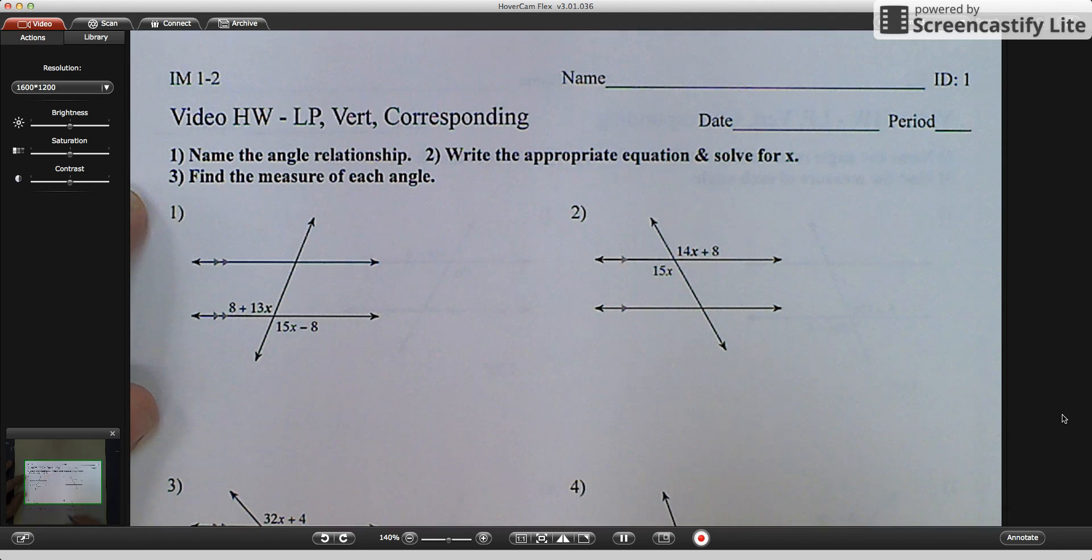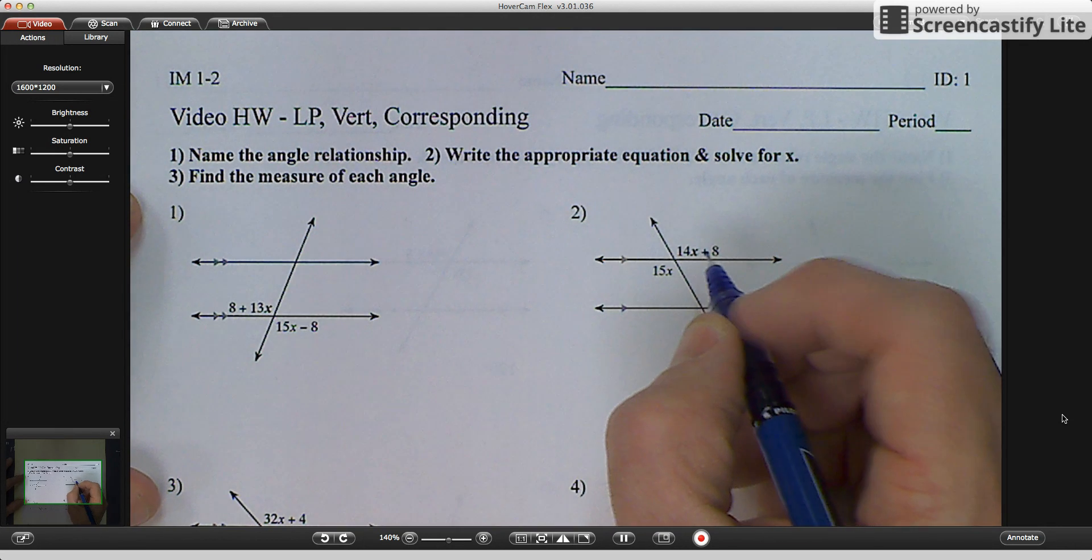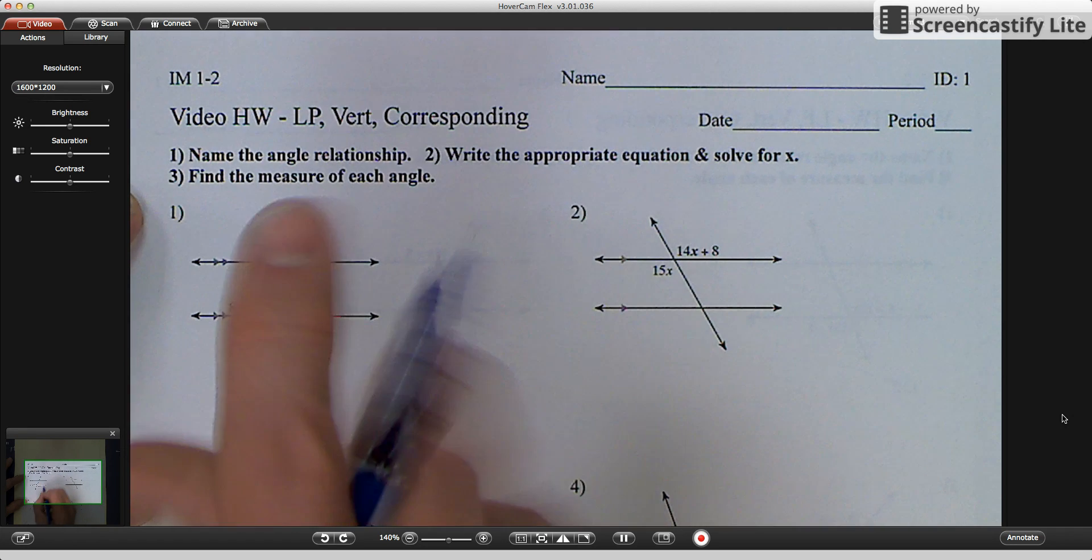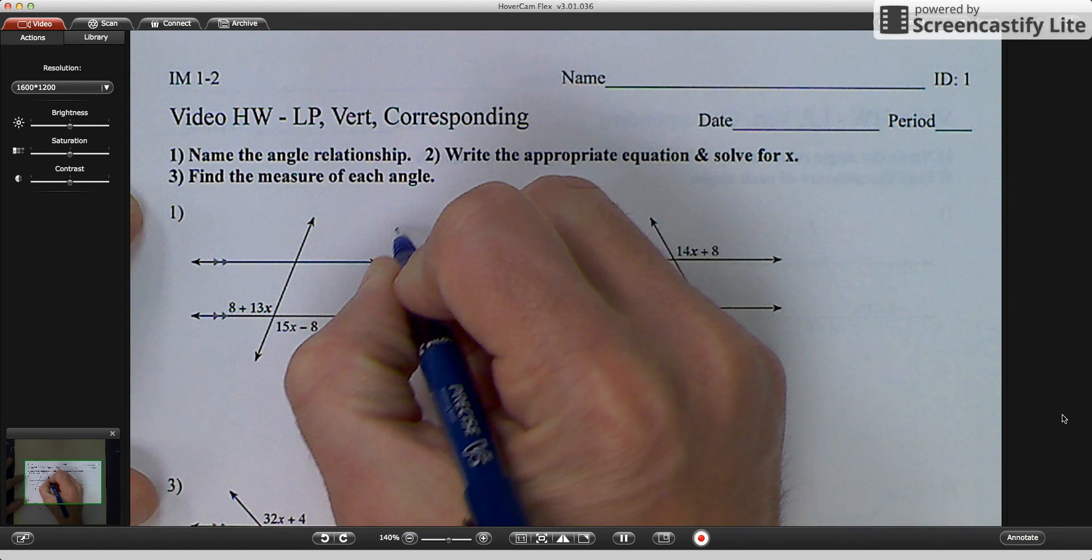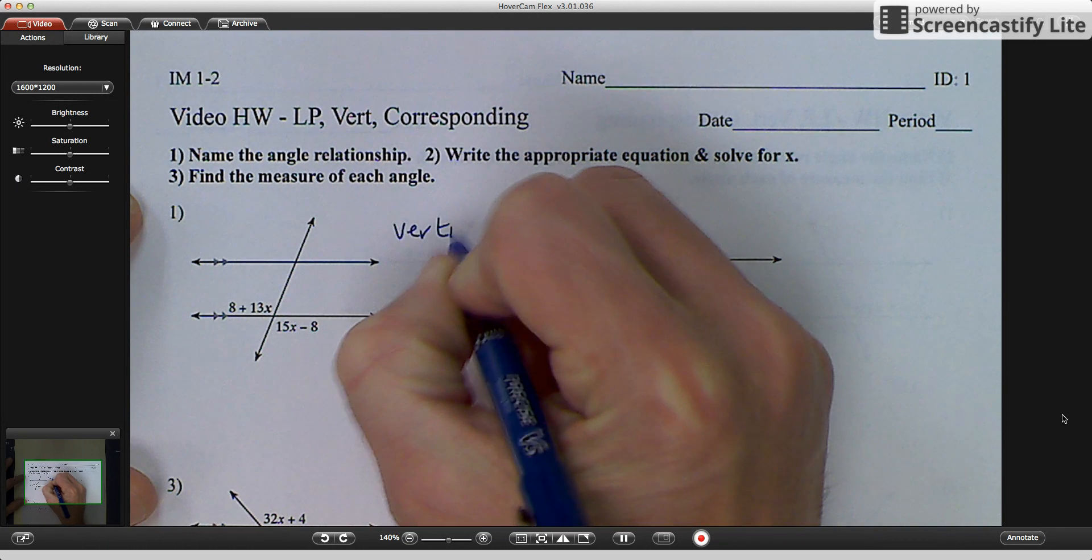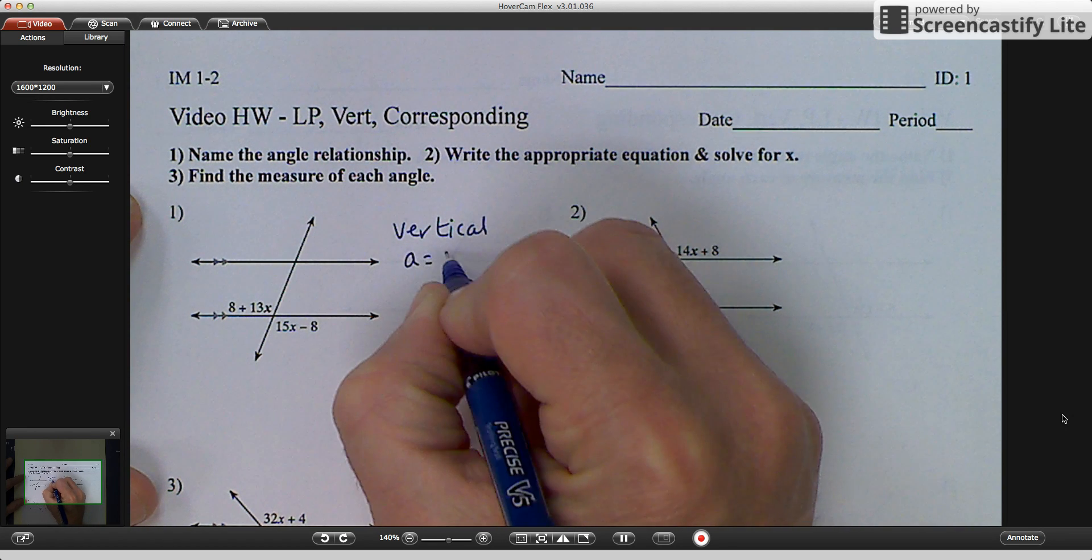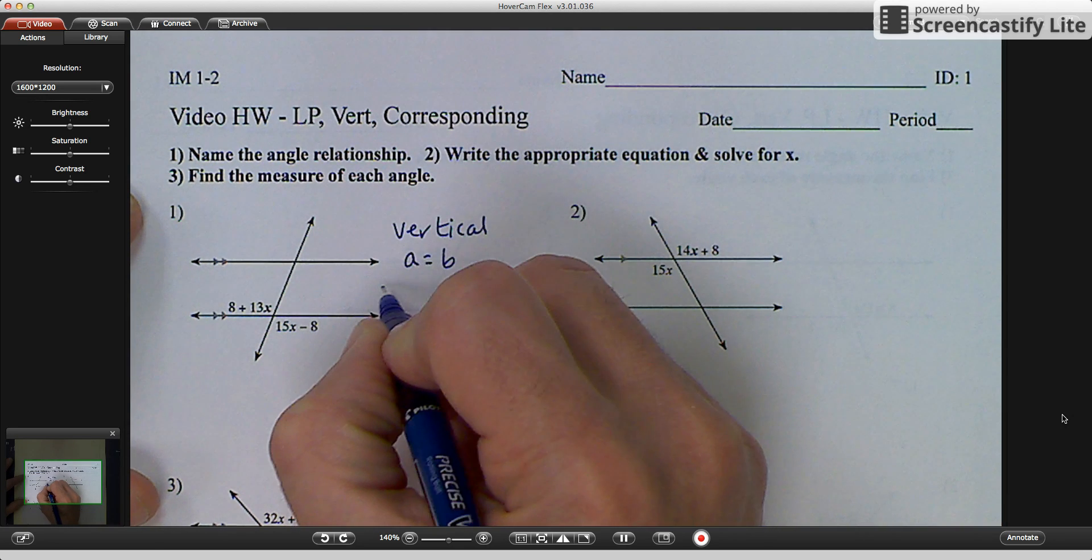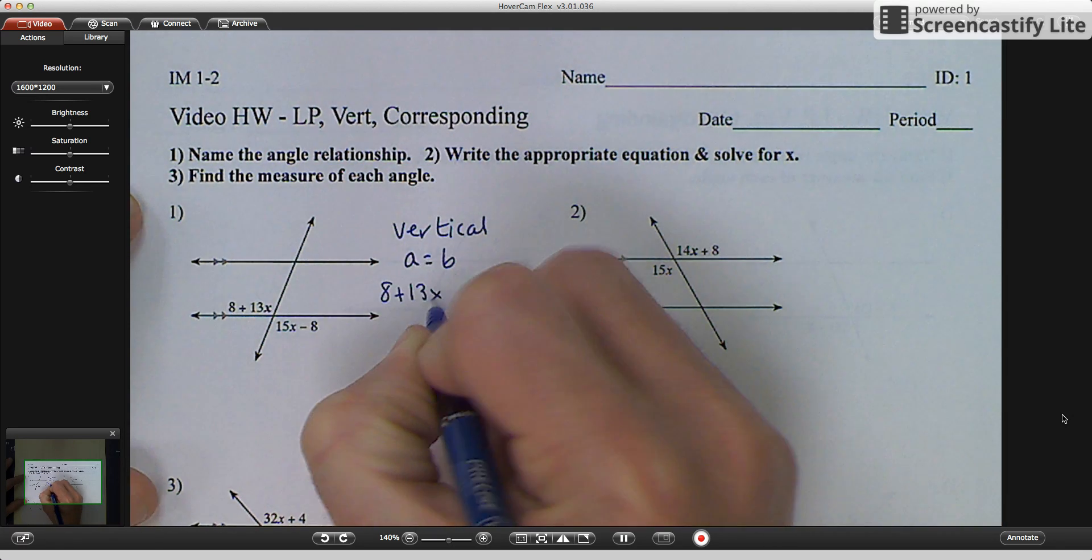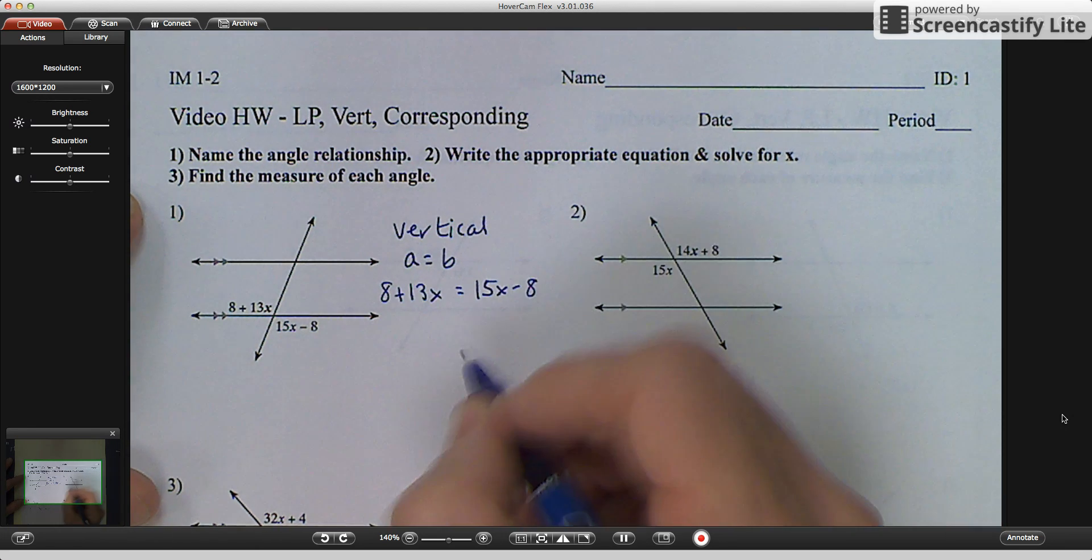Okay, so we've done the first part and I'm going to show you how to do the second and third part. We've done it before. So name the angle relationship. I have linear pair, vertical, and corresponding. As I look here, I notice that those two angles are vertical. I know that vertical angles are congruent, so the formula that I'm going to use is A equals B. And then I'm just going to take the angles, 8 plus 13x, and set it equal to 15x minus 8. And then I'm going to solve for x.